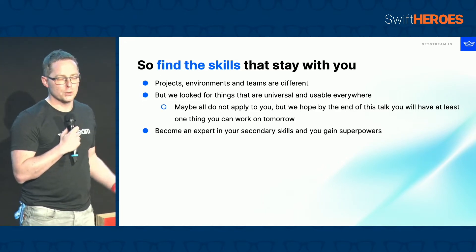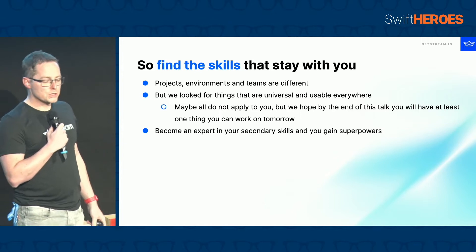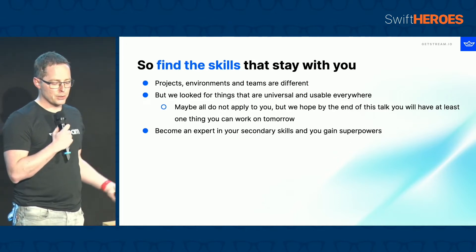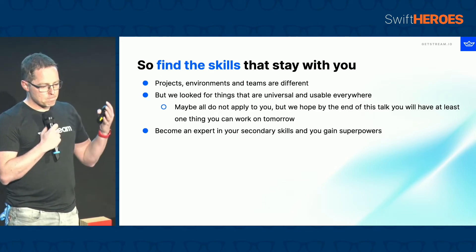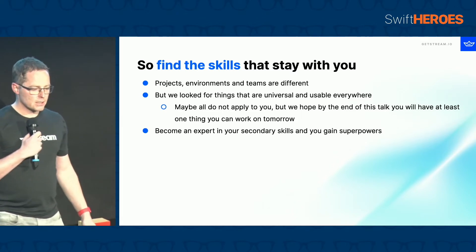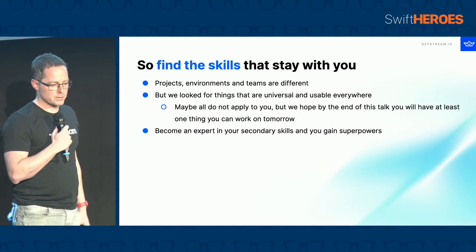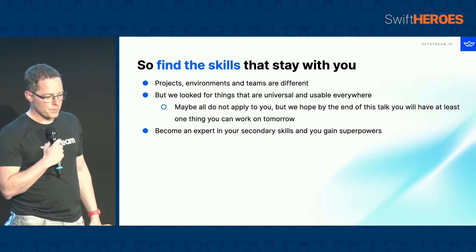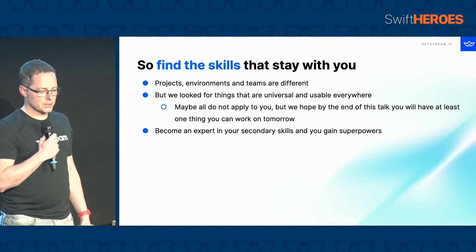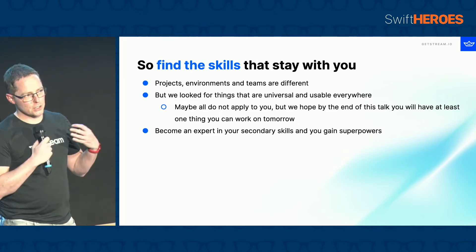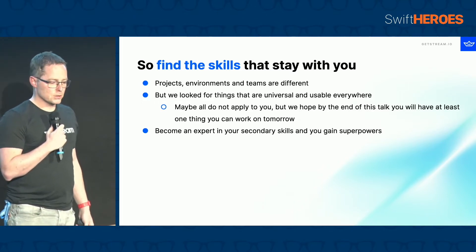Projects and environments where you do your work are likely to change. A few years ago I was working in the office, and nowadays I work 100% remote. But I still need to communicate, I still need to learn new things, I still need to make sure that I do my job to the best of my abilities. Those skills are usually usable everywhere you go, even if you decide to switch out of software development. Becoming an expert in your secondary skills gives you superpowers and helps you be a more productive software developer and team member.